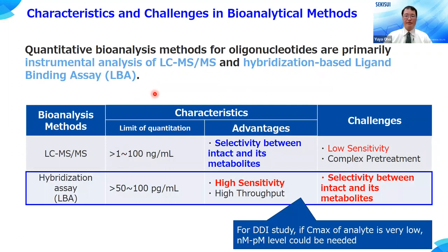I would like to mention the quantitative bioanalysis methods for oligonucleotides. In general, we use LC-MS/MS or LBA methods when we measure quantitatively the concentration of oligonucleotide solutions. LC-MS/MS has the advantage of signal selectivity among the intact body and its metabolites, as we can separate signals via filtration by using a suitable column. However, LC-MS/MS cannot realize high sensitivity at the picomolar level. In contrast, the LBA hybridization method can realize high sensitivity at the picomolar level with relatively high throughput. However, the biggest challenge for the conventional LBA method is that it is difficult to separate signals of a metabolite from those of the intact body.